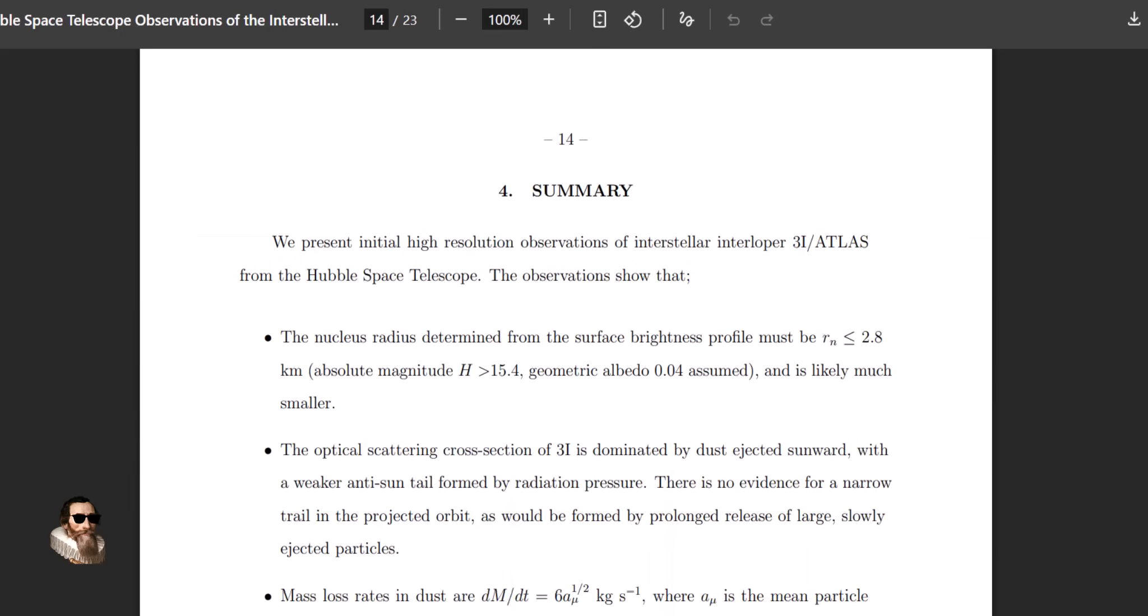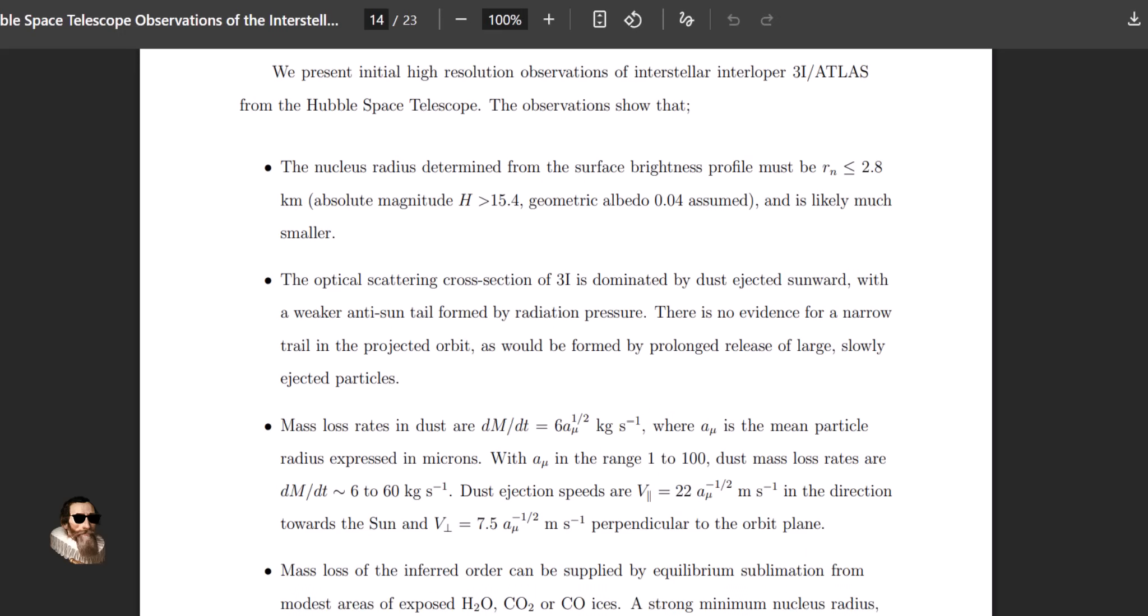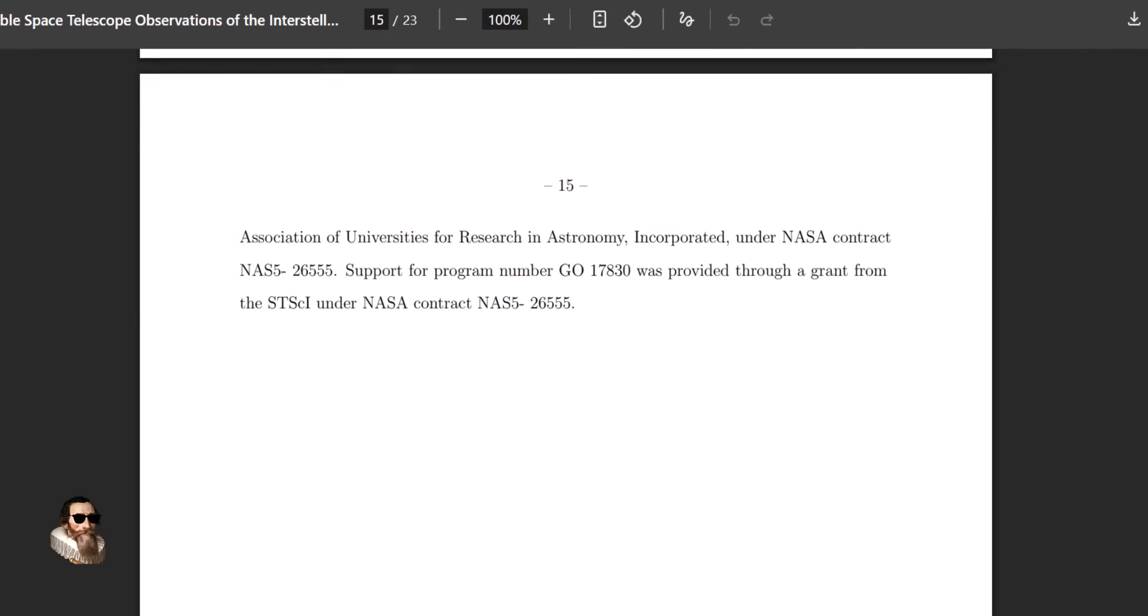And illumination by sunlight alone cannot explain the profile of scattered light where the radial distance from the nucleus is apparent. And the simplest interpretation is that the nucleus of this object produces most of its own light.